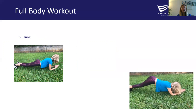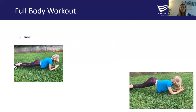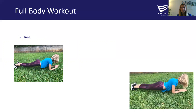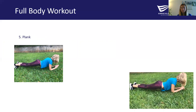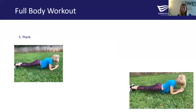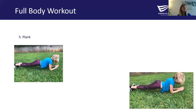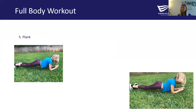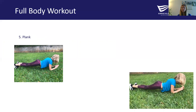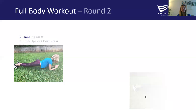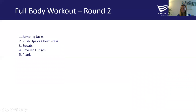Our last exercise for round one is our planks. Make sure your shoulders are in line with your elbows — not forward from them — a nice neutral neck, and your abdomen stays tight. You want to protect your back by making sure your core is engaged, that belly button pulling in towards the spine. You can do this on your toes or on your knees, just make sure your hips aren't raised and are parallel to the ground. Do that for 30 seconds, and that's the end of round one. Take a quick break, get a sip of water, catch your breath, and when you're ready, we'll come back to round two.